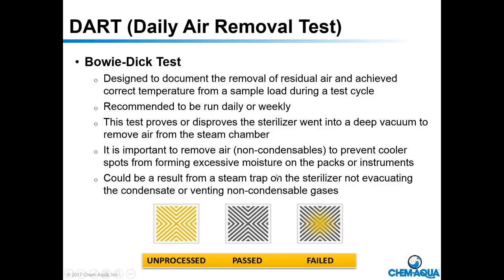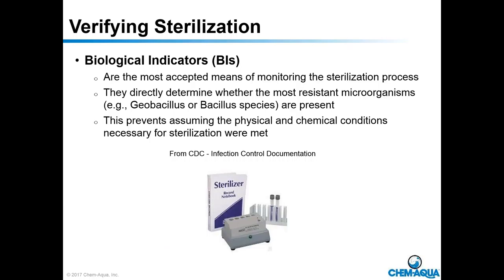The Bowie-Dick test tells us a lot about how well the steam chamber is functioning. If it passes, it means all non-condensible gases have been removed and steam temperature came up to proper temperature. This piece of information helps in putting together the puzzle of what's happening at your facility. Another verification method is biological indicators, or BIs — a very well-accepted method for monitoring the sterilization process.